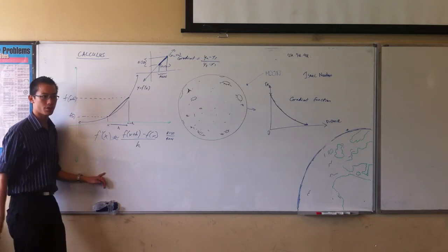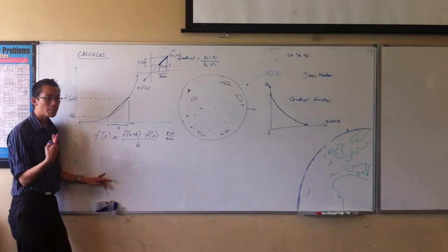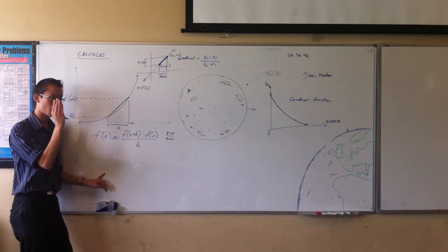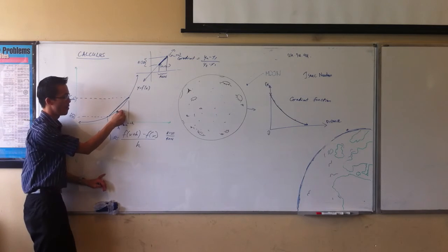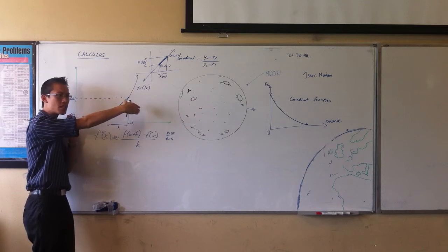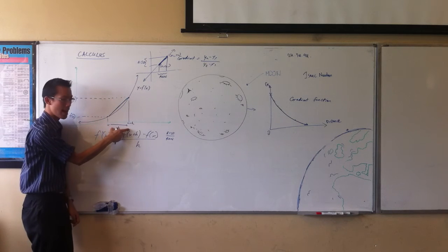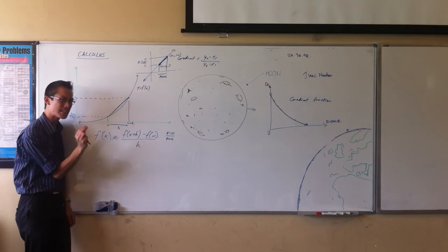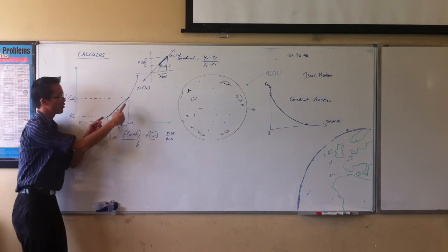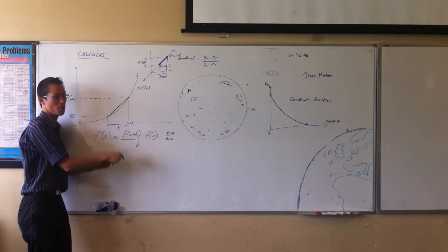Now, he said, that'll get you close. That'll get you close. But I want to be better than close. I want to be precise. I want to consider, what if it wasn't like a stretch of an interval over here? What if I could take this h and make it infinitesimally small? So, these points were almost sitting one on top of another.